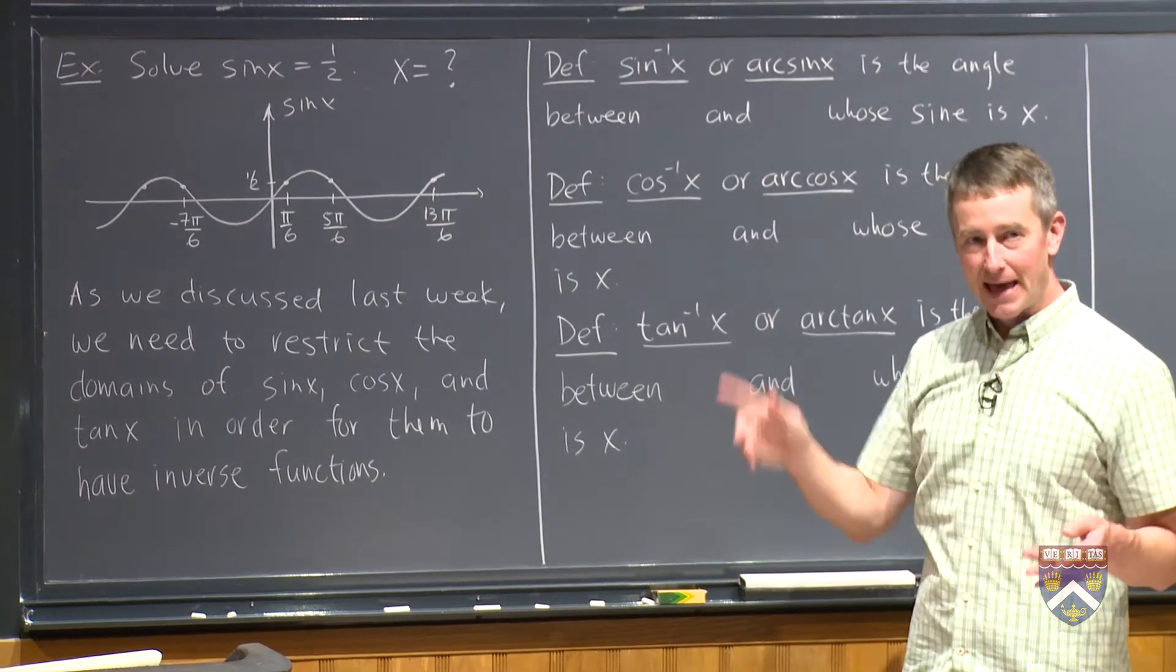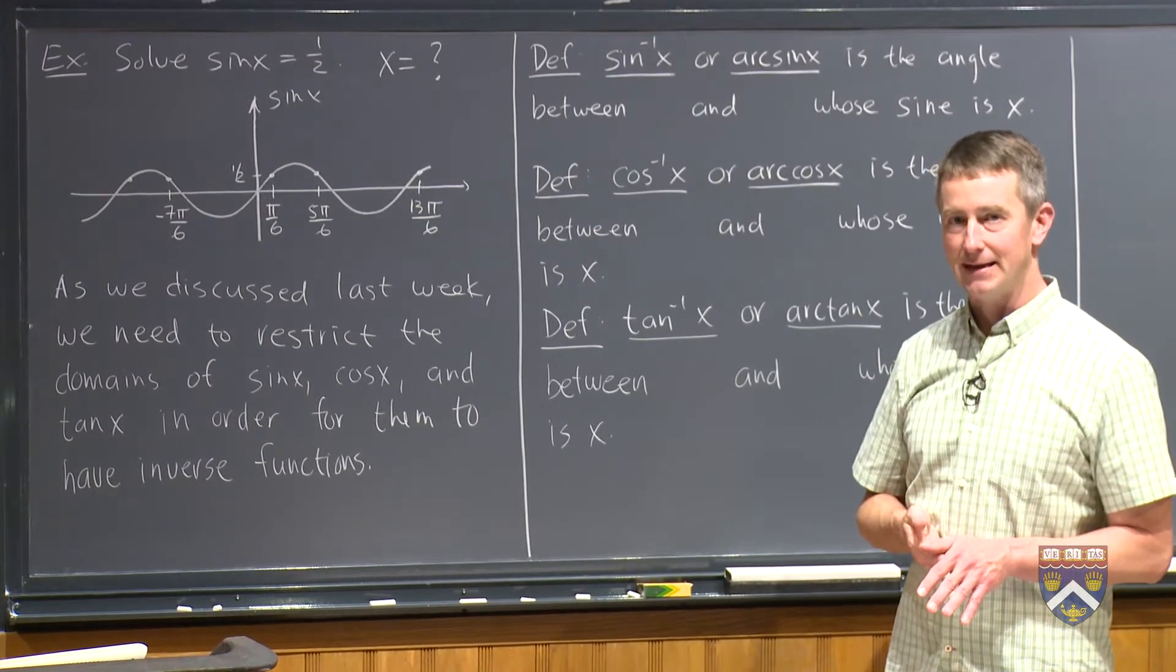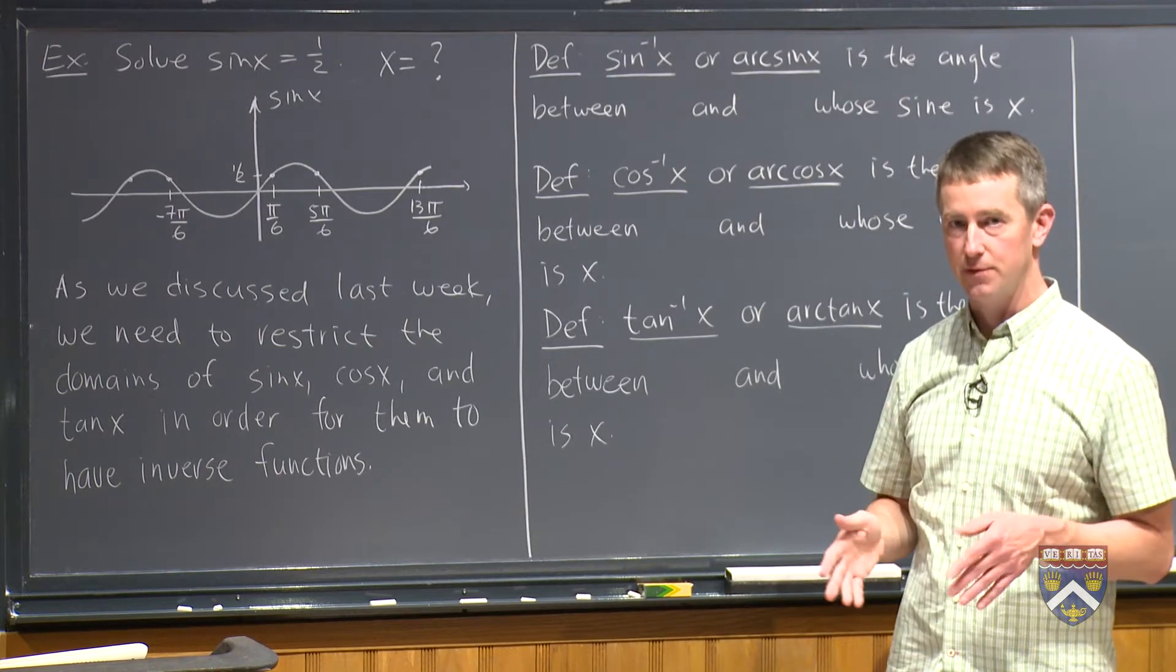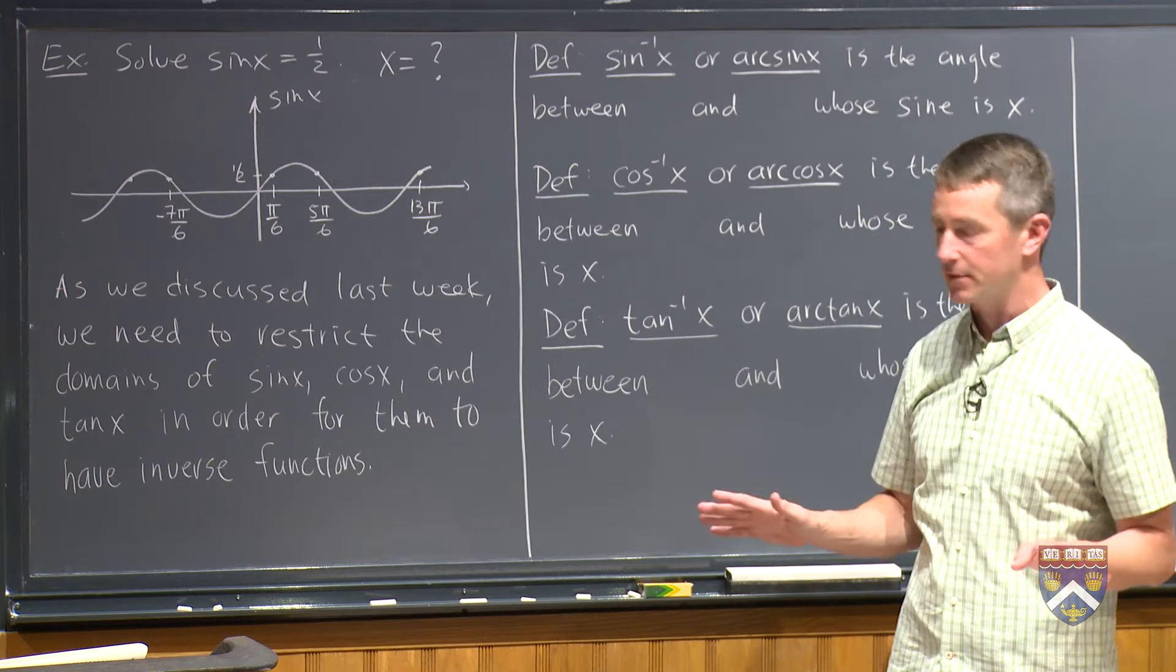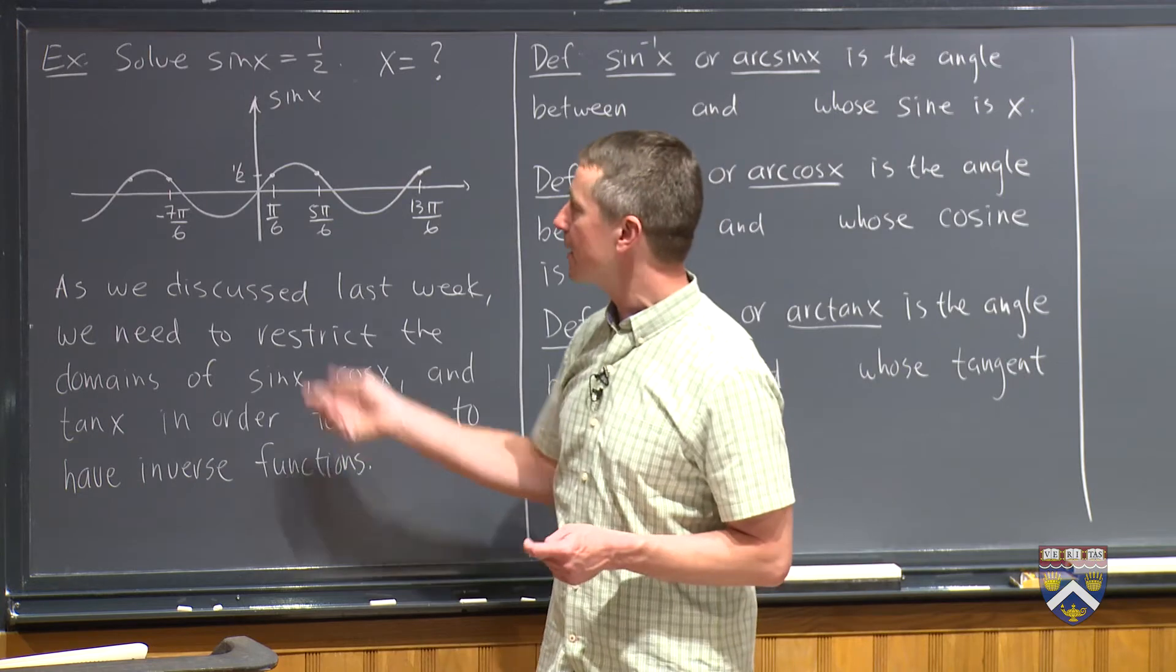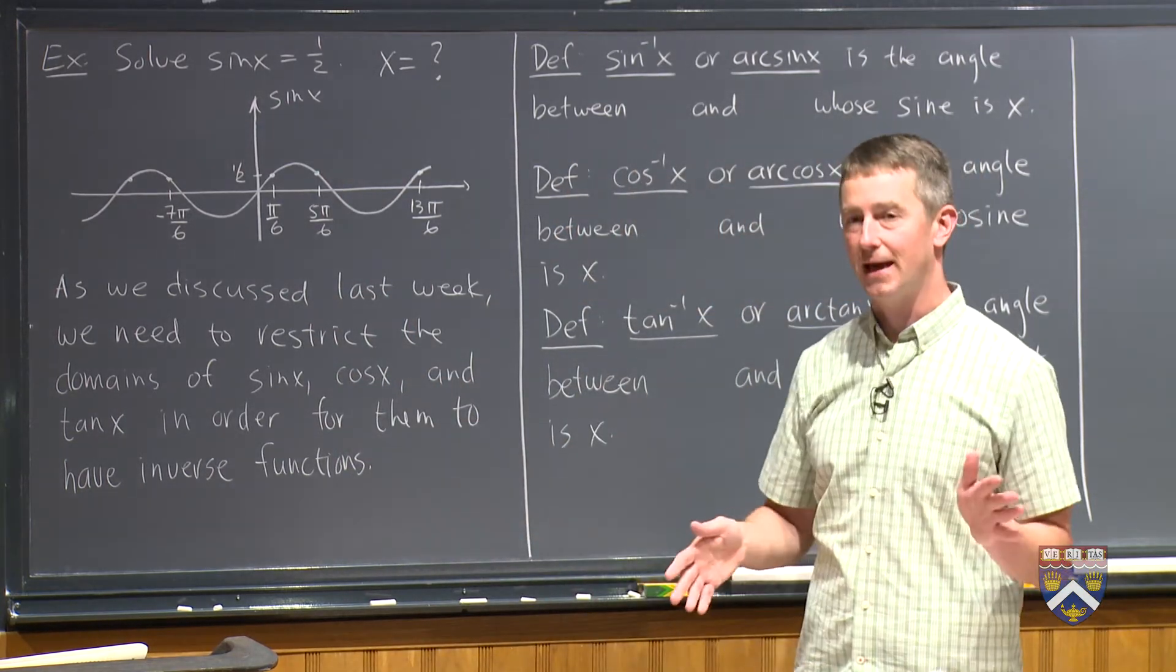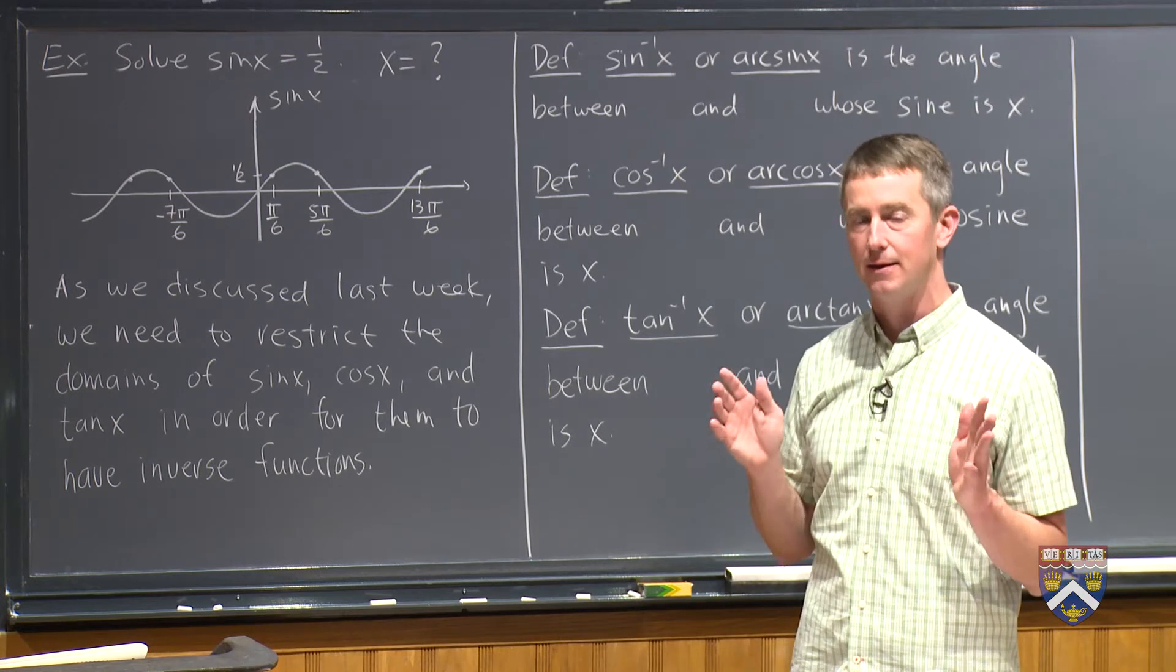So as we did last week with the x squared function, where we said the inverse of the square, we always get a non-negative answer. So the square root of 9 is always 3, never negative 3. The whole planet agreed on that. As we discussed last week, we need to restrict the domain of sine of x and of cosine of x and of tangent of x in order for them to have inverses that are actually functions.